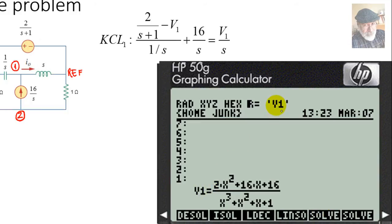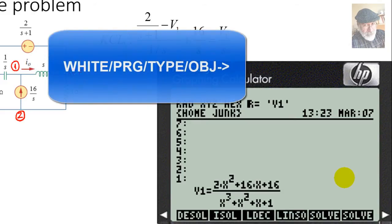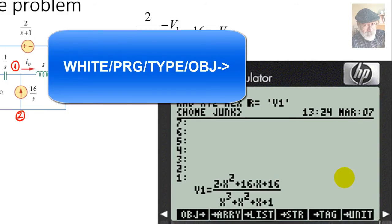V1, this independent variable, is a function of s. In other words, we have obtained the Laplace transform of the voltage of this node with respect to the reference. If I divide that voltage by s, I will get the current I0, this term. Let's do that. But you cannot do that because what you have on the screen is not a transform, it's not one expression, it's an equation. V1 equals 2. I want to rid ourselves of that V1 equals. How? White shift, program, type, and we find this menu.